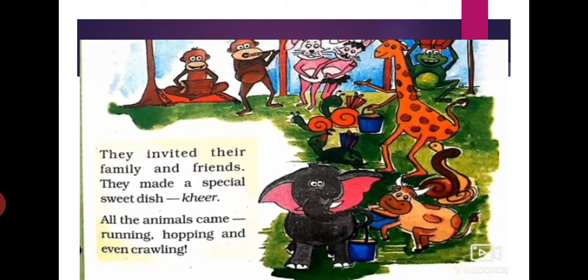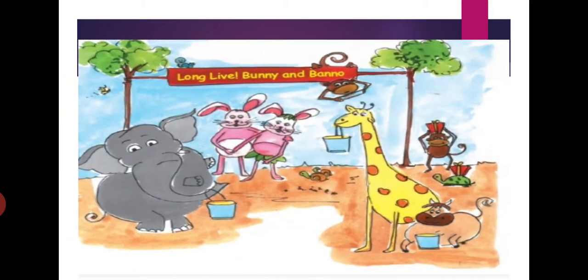They invited their family and friends. They made a special sweet dish — Kheer. All the animals came running, hopping and even crawling to celebrate their wedding anniversary. We can see here: long leaf, Bunny and Bano, and so many animals — elephant, giraffe, cow, monkey, tortoise, rabbits. Many animals came to attend their wedding anniversary and they are carrying buckets with them.